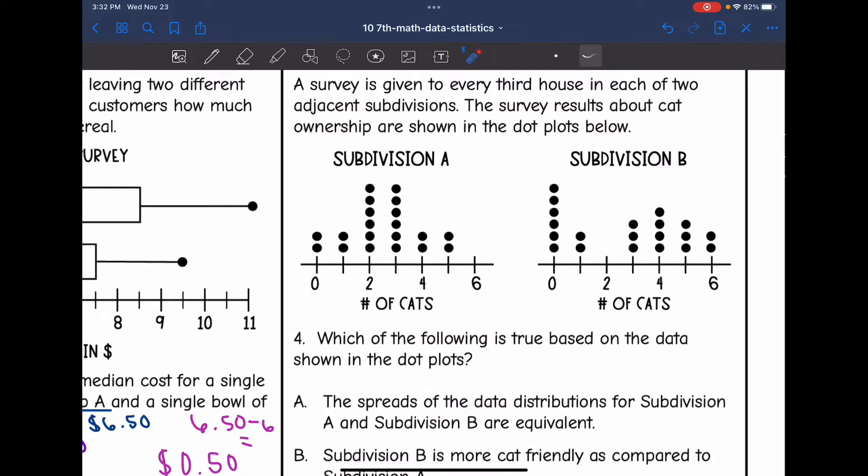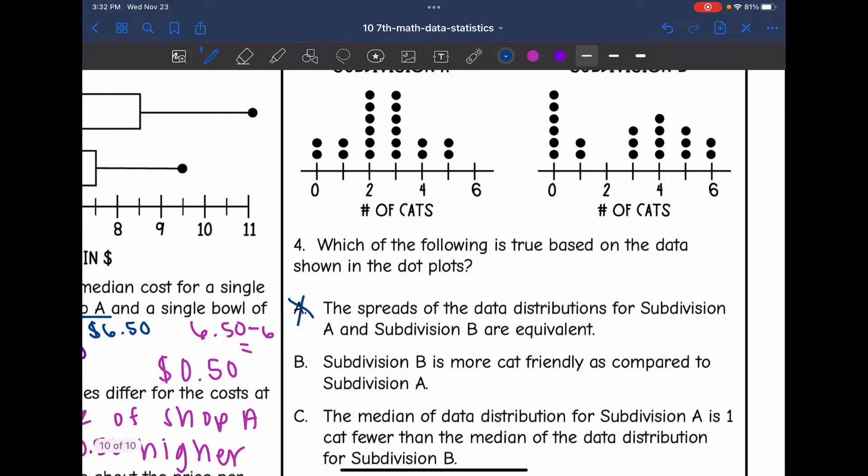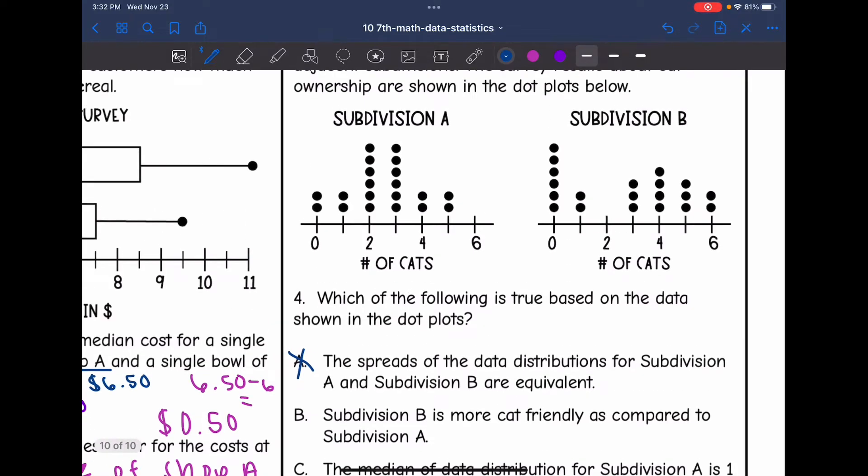It says, which of the following is true based on the data shown in the dot plots? A says the spreads of the data distributions for Subdivision A and Subdivision B are equivalent. That is false. We already talked about how we have one that's symmetrical and one that's skewed. Then B says Subdivision B is more cat friendly compared to Subdivision A. If you look at Subdivision B, there are more of them with more cats. Subdivision A is pretty in the middle. So that could be true.